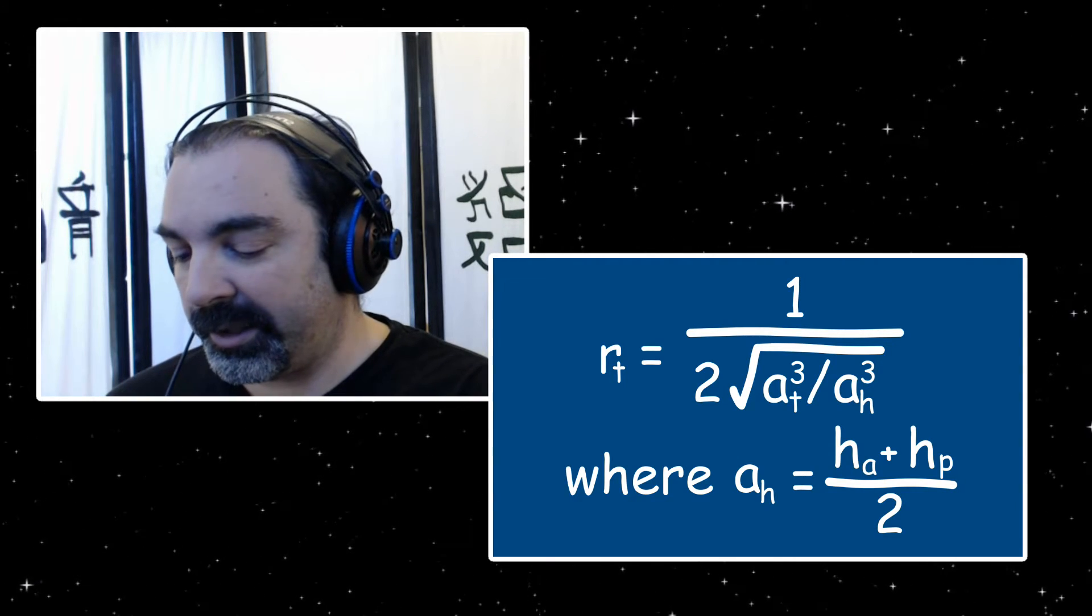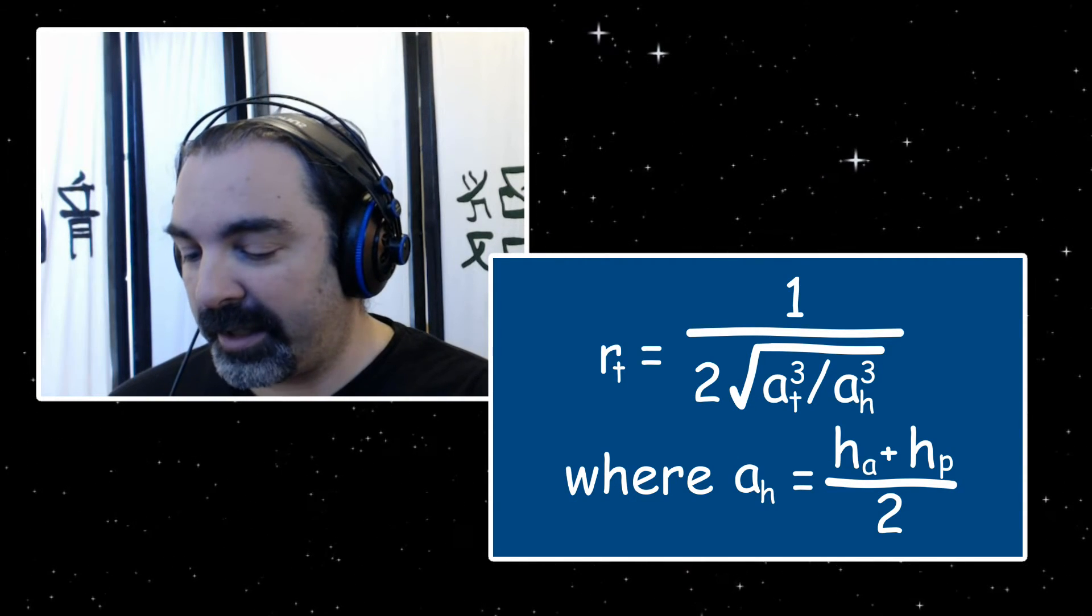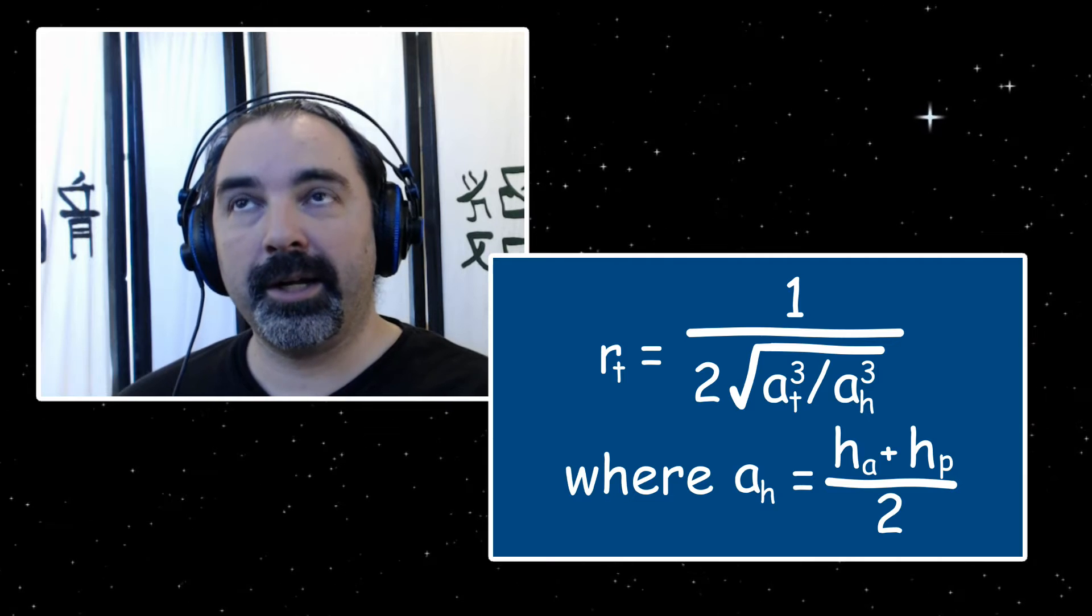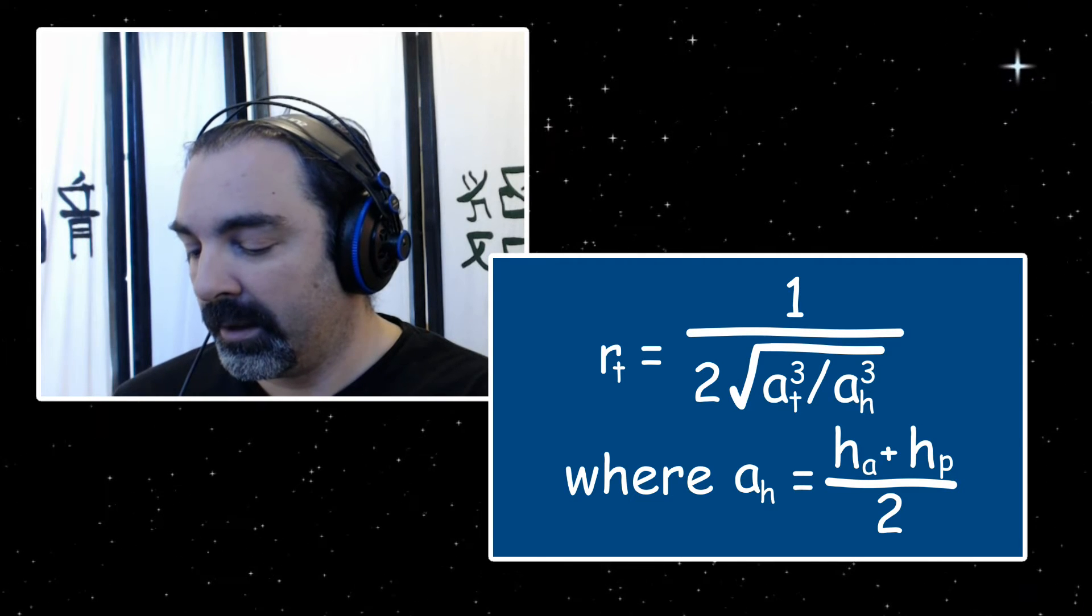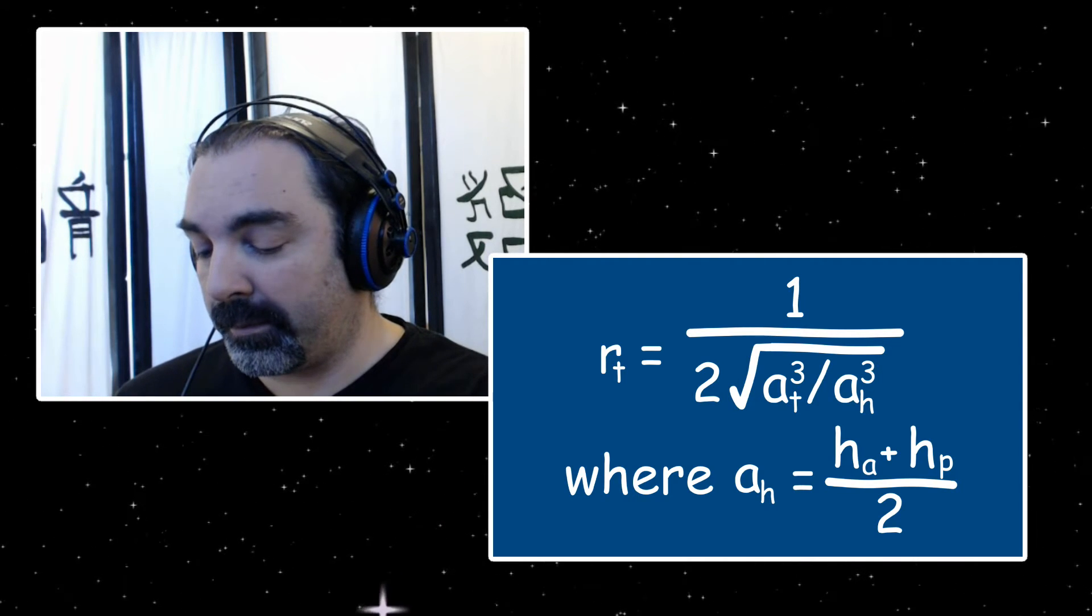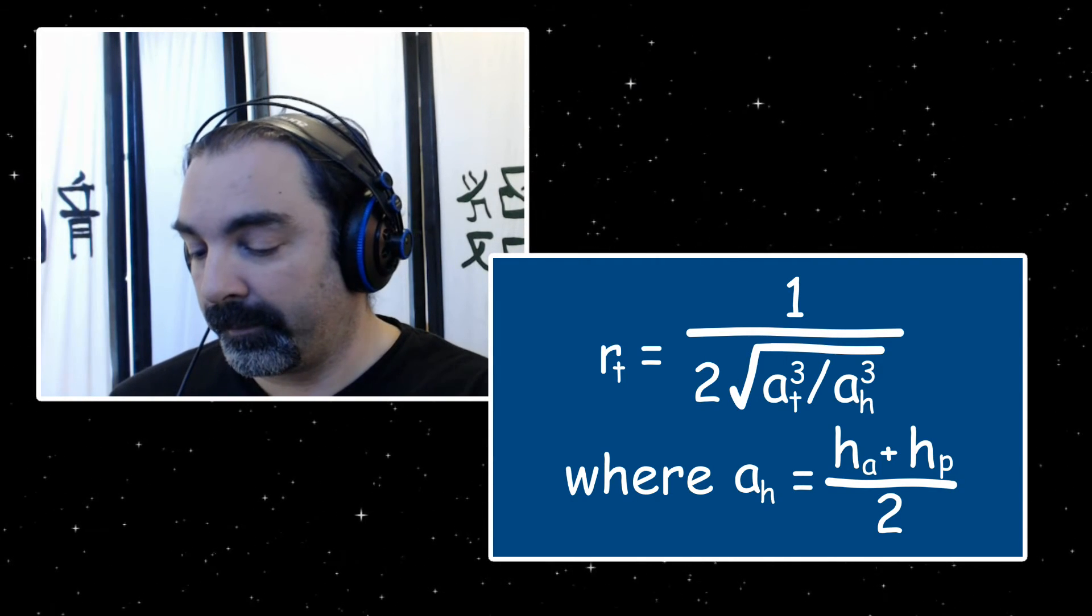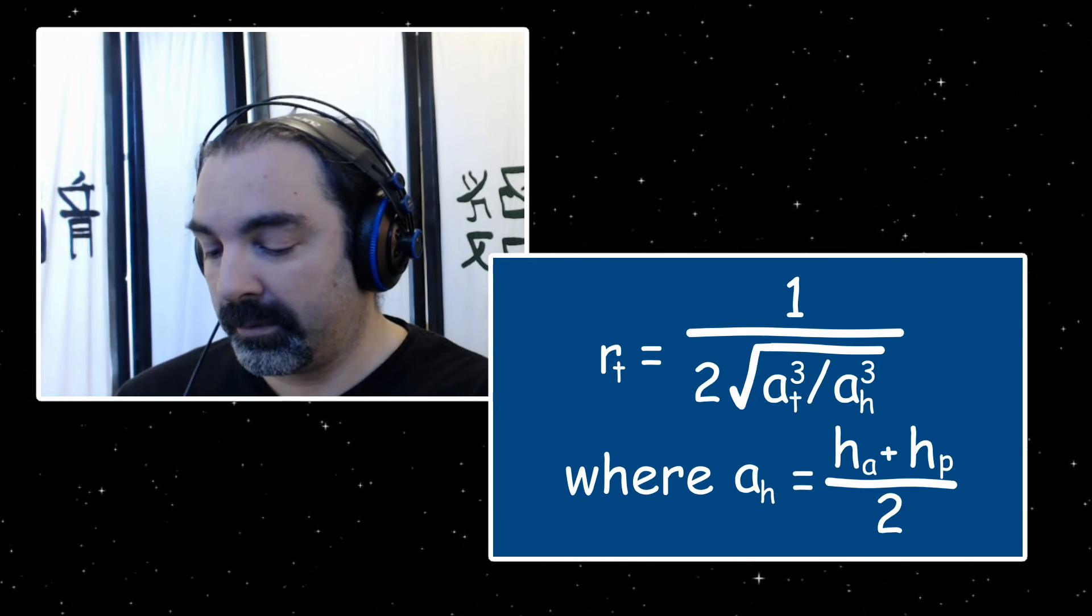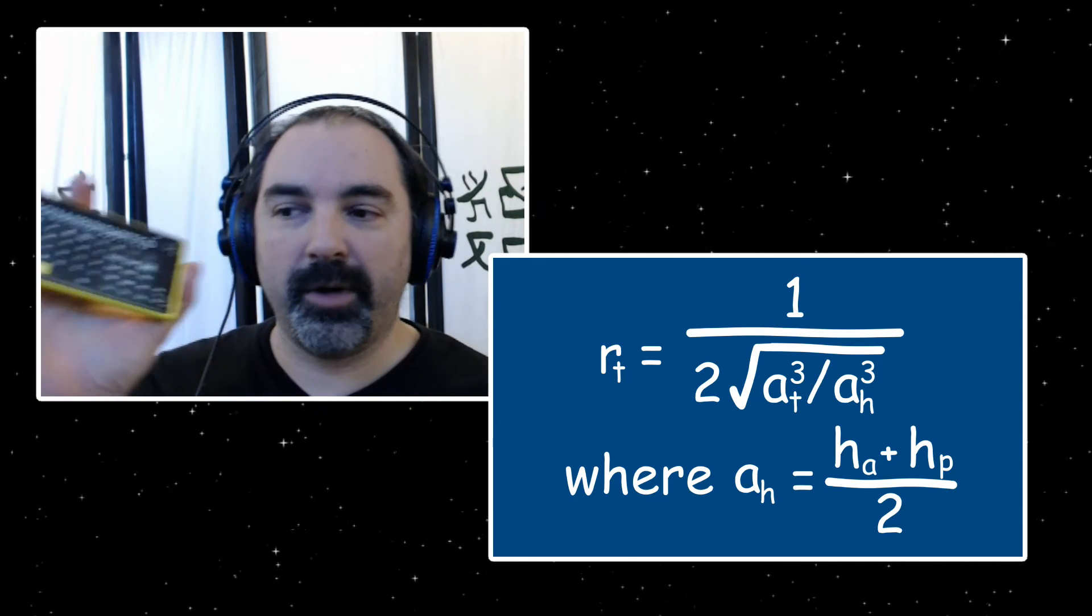If I don't make any mistakes doing this here, clear the memory. 20.7 plus 13.6 gives me 34.3, divide that by 2, that's 17.15, which is my semi-major axis of my Hohmann transfer. Now working on the other part, take 20.7, cube that, divide that by 17.15 cubed. 1.75, take the square root of that, multiply that by 2.